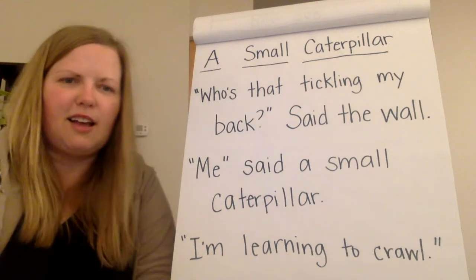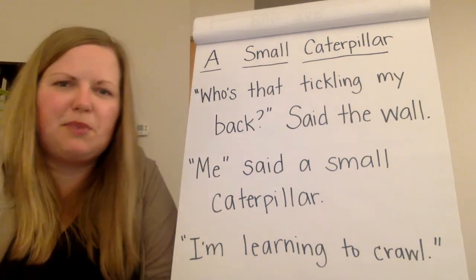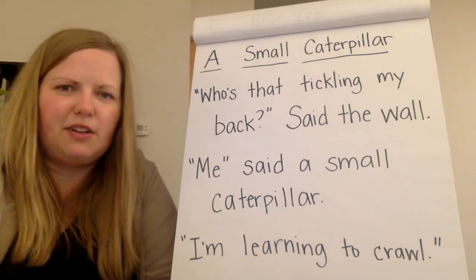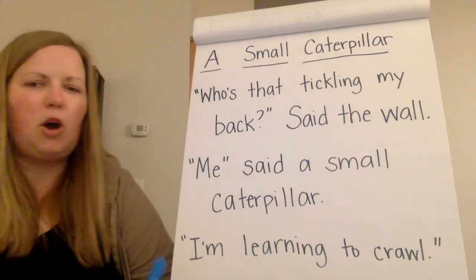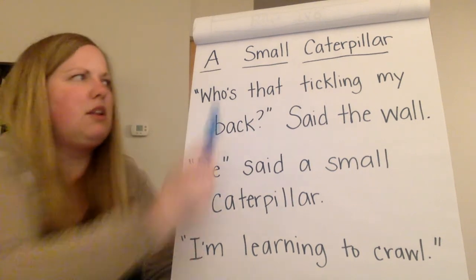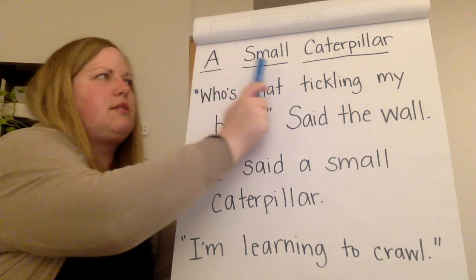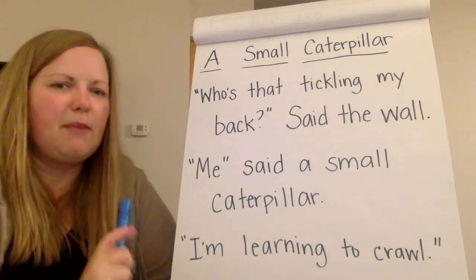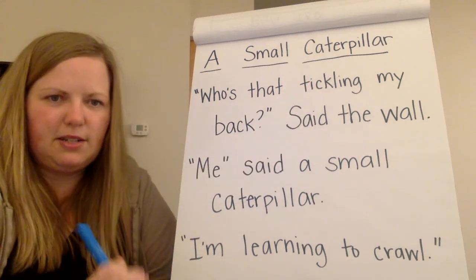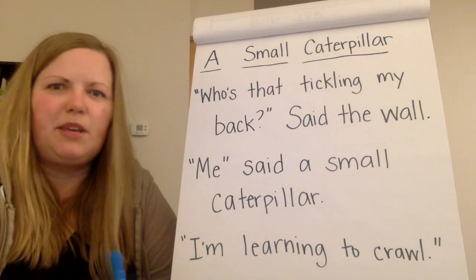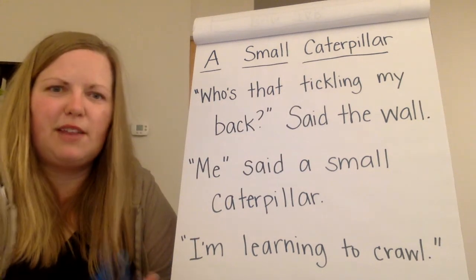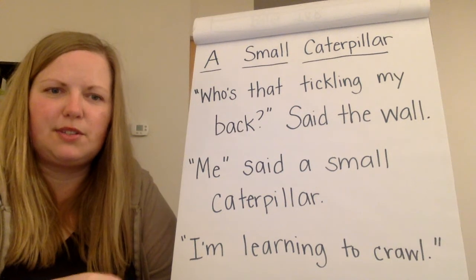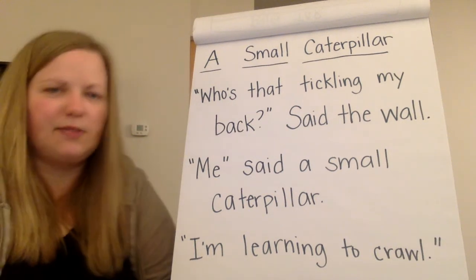Hi kindergarteners! I thought we could read this poem together today. The poem is called A Small Caterpillar. I'm going to read it through one time, and then we can read it together, and then I'll go back through and circle the sight words that we can find.